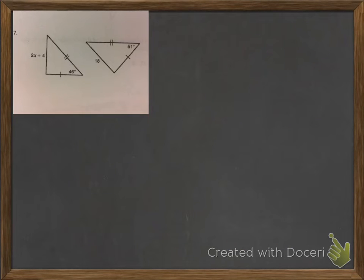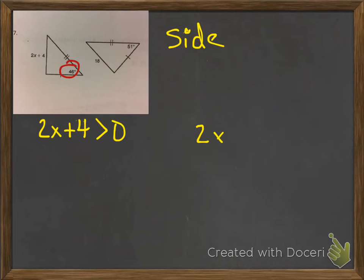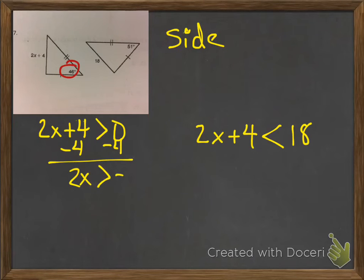All right. Next example. We want to do the same thing. Again, this one is dealing with sides. Again, because you can see here we've got numbers for the angles. So we've got sides. And again, it's going to be greater than 0 and less than the other side, which in this case is 18. You're going to subtract, go from there, and you should be done.